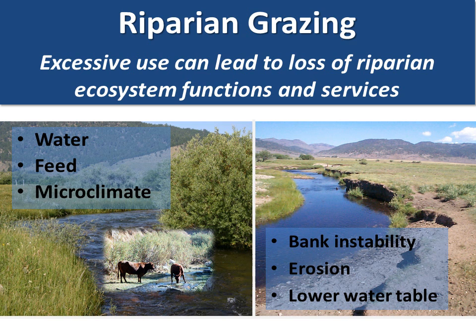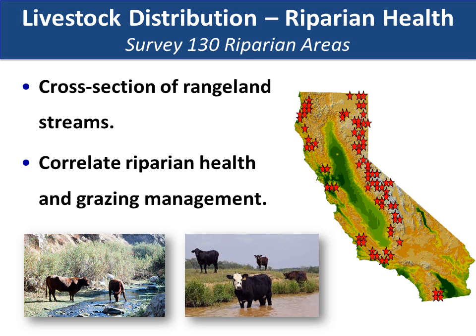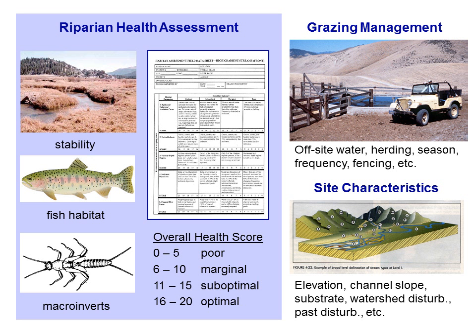We've got a stream reach that's in marvelous condition and a reach that could use some help. Across that gradient, we correlate management that's occurring with the condition of the stream at the time. And so we did that.